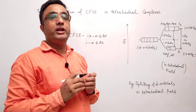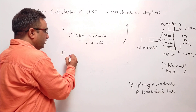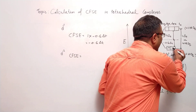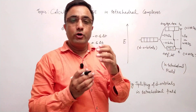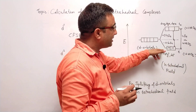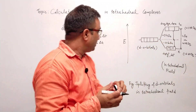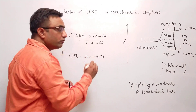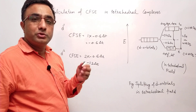In case of D2, CFSE will be: if two electrons are there, one electron is present in this orbital and one is present in this orbital, according to Hund's rule of maximum multiplicity. Two electrons are in the lower energy level, and the stabilization factor for a single electron in the lower energy level is minus 0.6. So two multiplied by minus 0.6 delta T gives CFSE of minus 1.2 delta T.